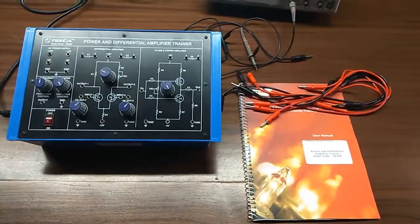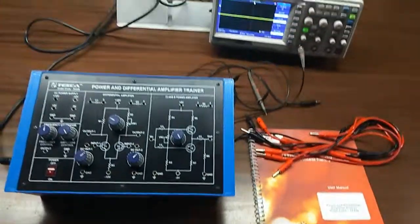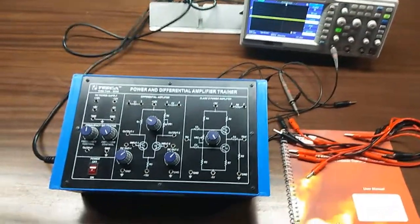Today, we are going to show you our Power and Differential Amplifier Trainer with order code 36326.